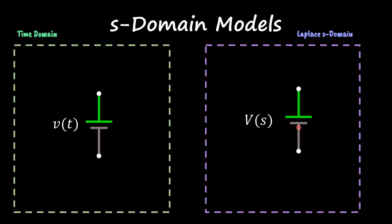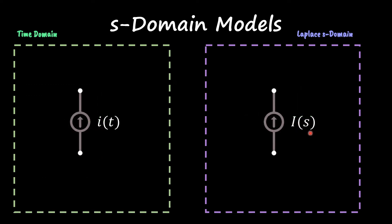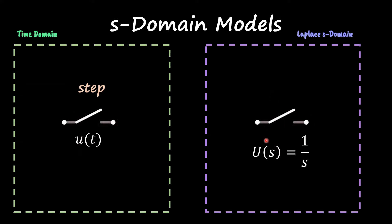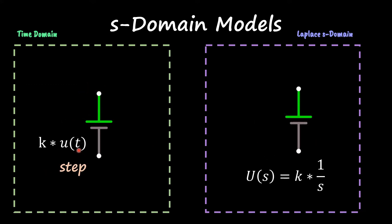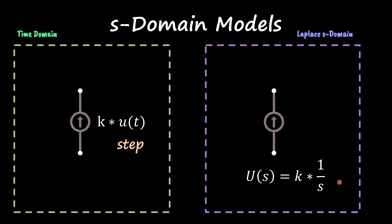In the s-domain, a voltage source remains a voltage source, and a current source remains a current source. If you have a step input — represented as u(t) or a switch in your circuit — its s-domain equivalent is 1/s. So if you have a 5-volt source with a step applied, in the s-domain you get 5 times 1/s. The same applies for current sources: the current source value is multiplied by 1/s.